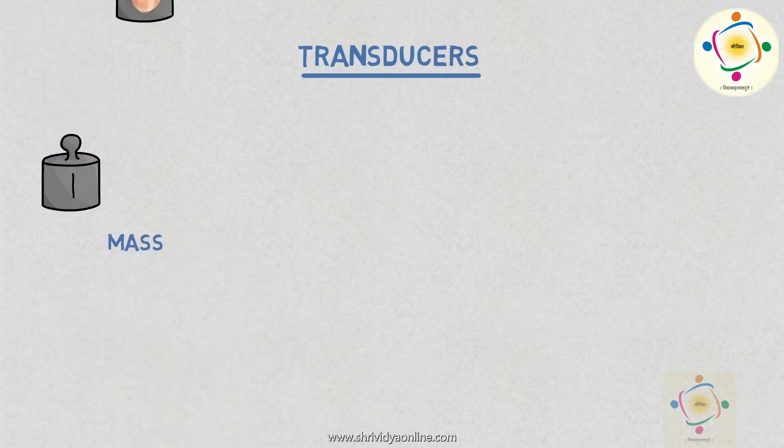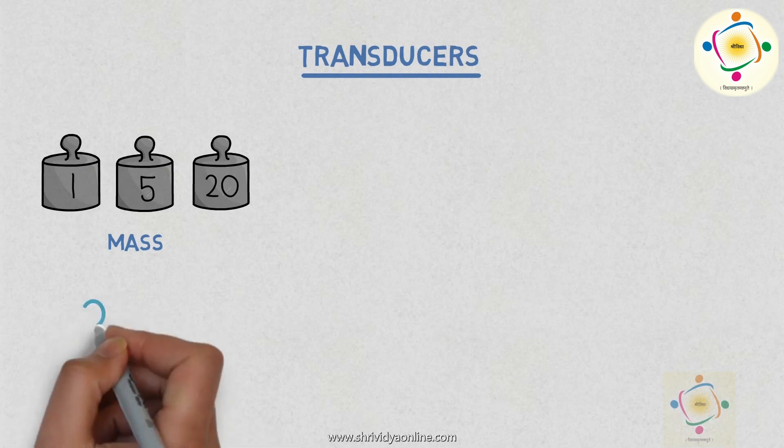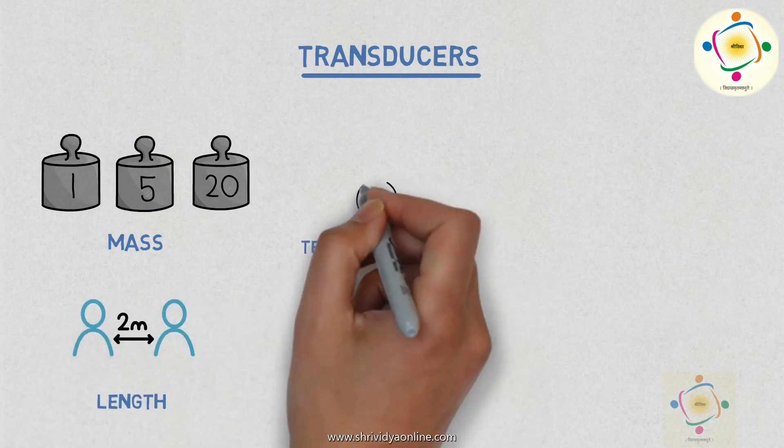There exist numerous physical quantities in the world. For example, mass, length, temperature, etc.